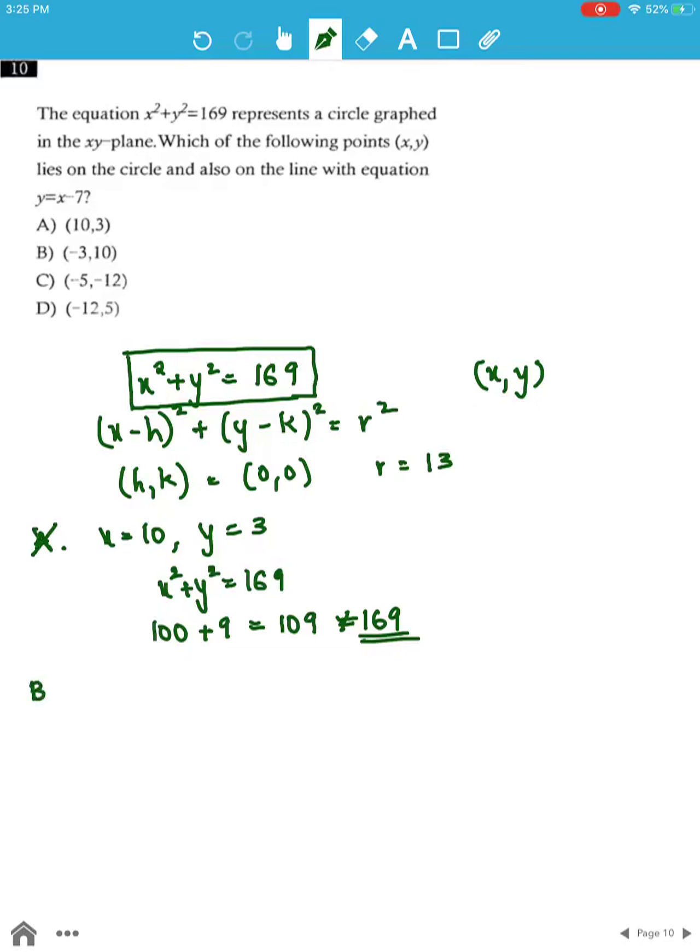In option B, when x is -3, y is 10. Plugging these in gives us 9 plus 100 which is 109, not equal to 169. So this point also cannot lie on the circle.